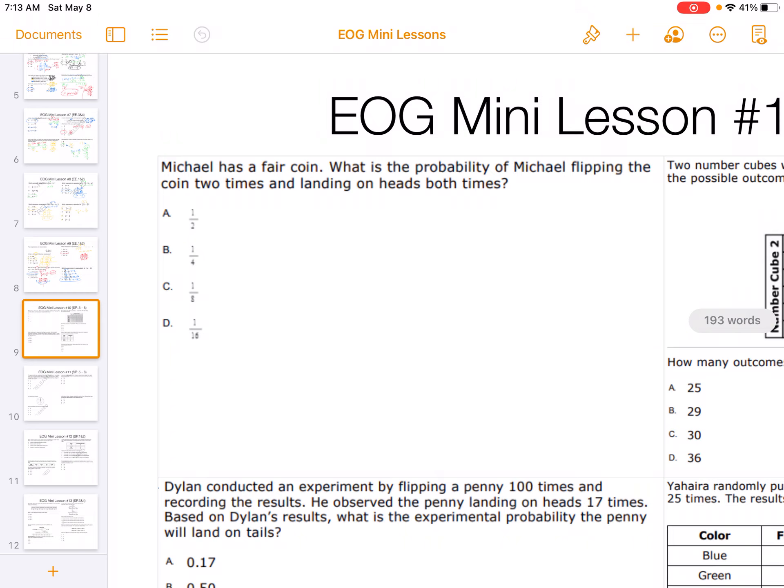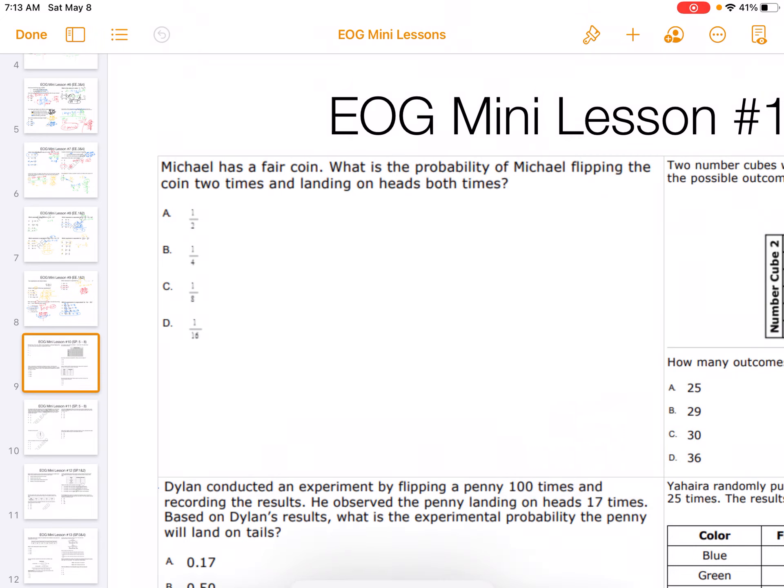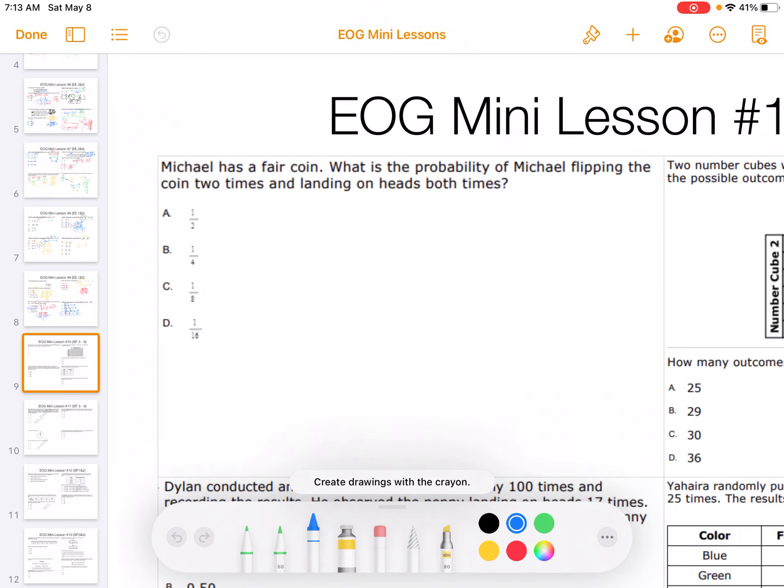Alright, so I'm going to draw myself a tree diagram. So my options are heads or tails for the first coin, and then for the second coin I could get heads or tails. And if I did tails first, I could get heads or tails on the second coin. So the probability that I would land heads up both times is 1 out of 1, 2, 3, 4.